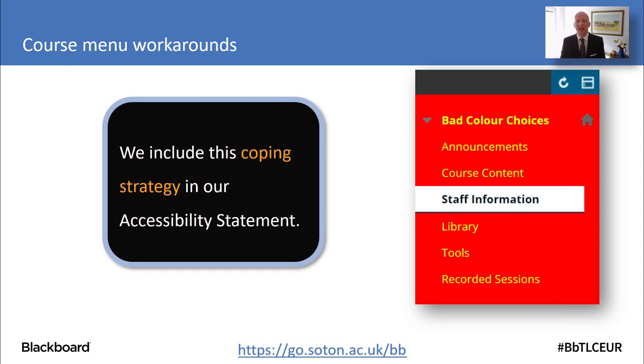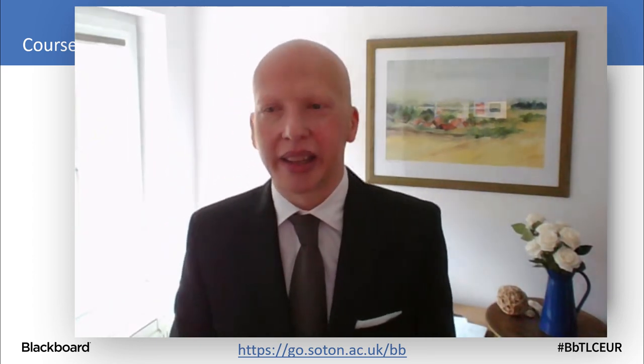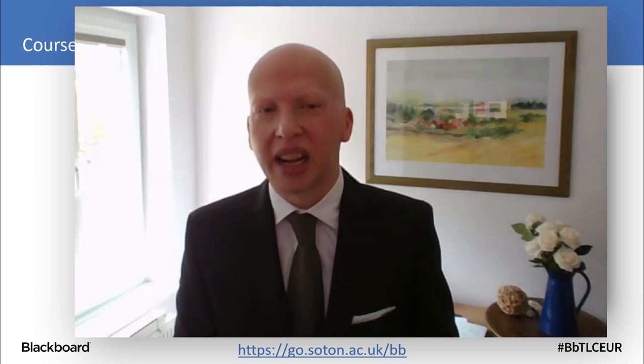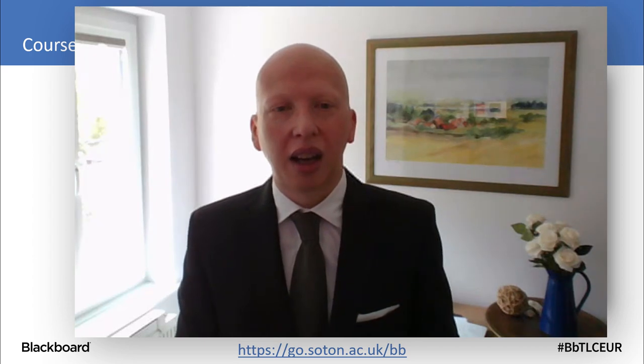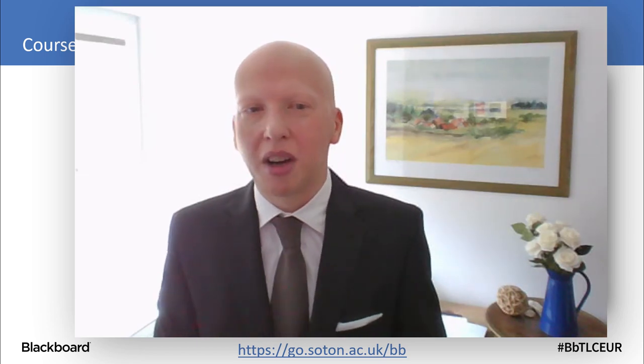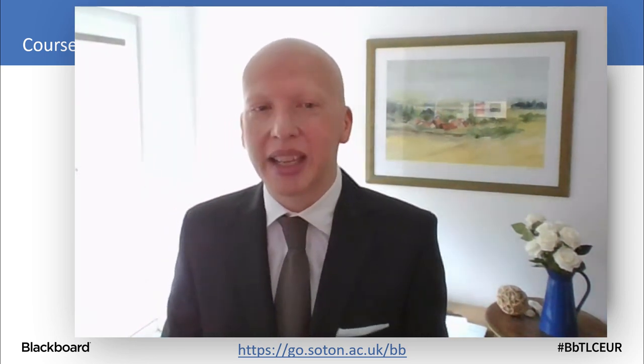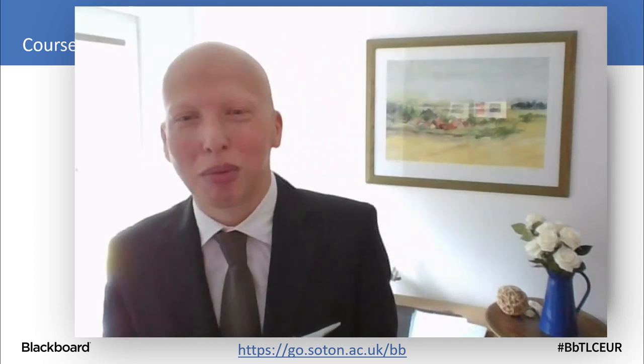We included that in our accessibility scheme as a coping strategy, because we didn't want to stop instructors from being able to change their colour schemes unless that was a departmental or faculty policy. But until we come up with something better, this is our coping mechanism. I would be very interested to talk with developers who might be interested in working on a JS hack where, when configuring colour options for a course menu, it could take the two colours selected, send them to the WebAIM API to get the contrast ratio, then report on the ratio and perhaps disable the Submit button until colours with at least a 4.5 contrast level are set.